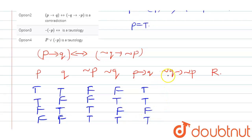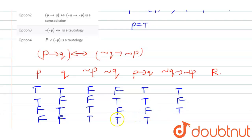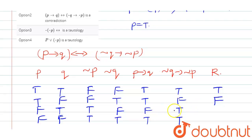For negation of q tends to negation of p: false-false gives true, true-false gives false, false-true gives true, true-true gives true. The final result column is: true, false, true, true.